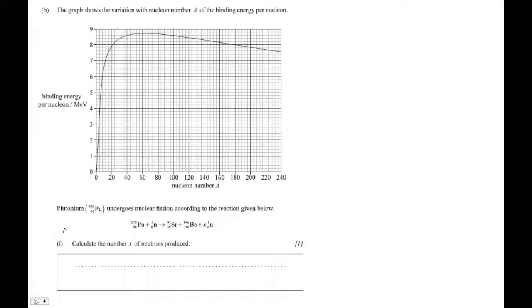Alright, so B letter I here, calculate the number of neutrons produced. So what you're going to do is you're just going to set up an equation. The total mass number has to add up. Presumably 94 equals 56 plus 38, and indeed it does.